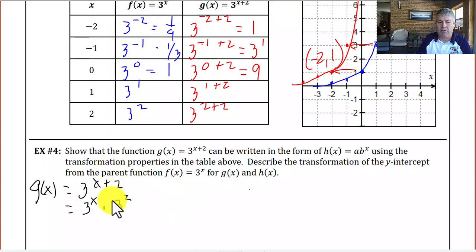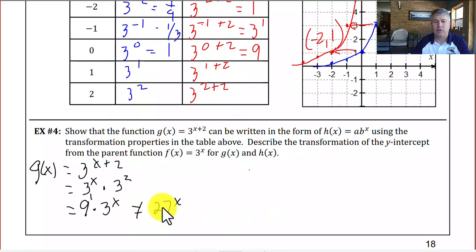Because we have the same base, we add the exponents, which gives us 3 to the (x plus 2). Well, 3 squared is 9, so I'm going to put that in front, and that becomes 9 times 3 to the x. Now, we might think that's 27 to the x, but it's not. This is 9 to the first, and we can't multiply those bases together. So don't make that 27 to the x. It's just 9 times 3 raised to the x power. So that is now our new function, h(x).